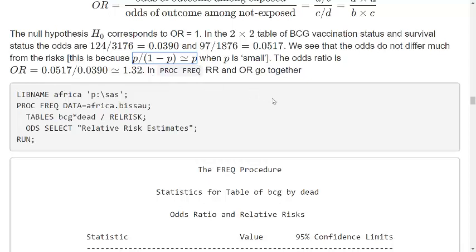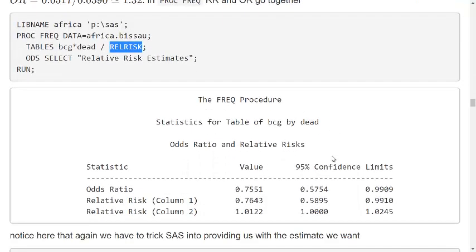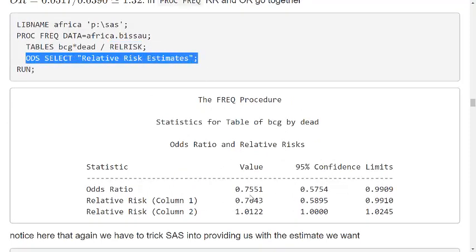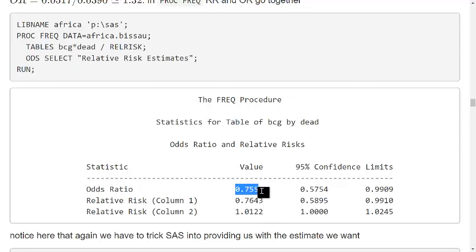And when I use Prog-Freq, I get the RR and the OR, I get them together. They always go together, so that's why we specify relative risk and we get the relative risks, but we also get the odds ratio. So I specified, I use an ODS select statement to only get the table I'm interested in. And here I see that the odds ratio is 0.7551 and the relative risk is 0.7643.